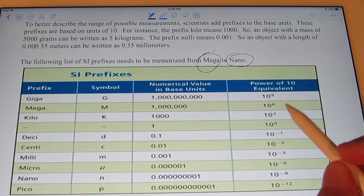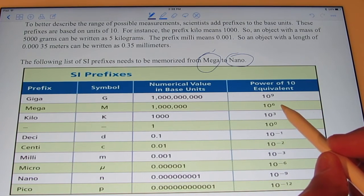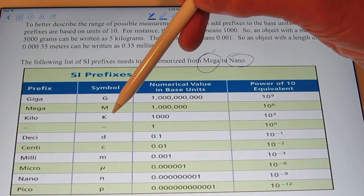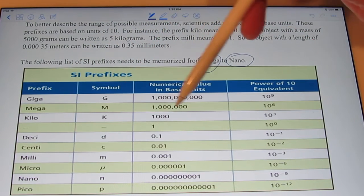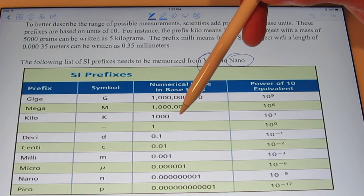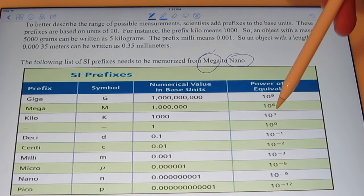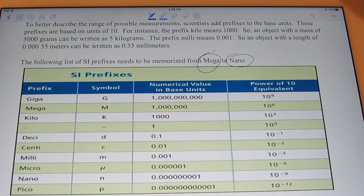Another way to write a million is simply ten to the sixth. Kilo is abbreviated by the capital letter K, and that means a thousand. So if I had a kilo-liter, I would have a thousand liters, and ten to the third is the power of ten equivalent.